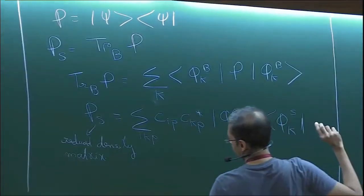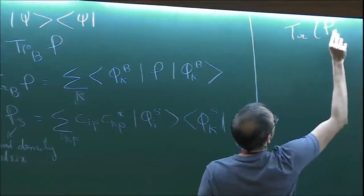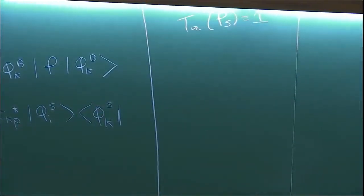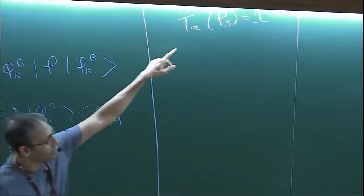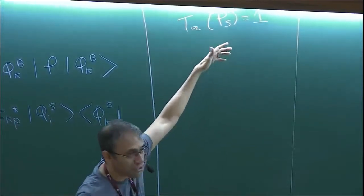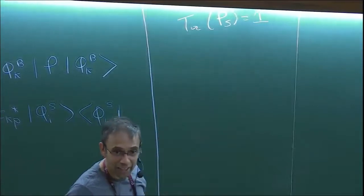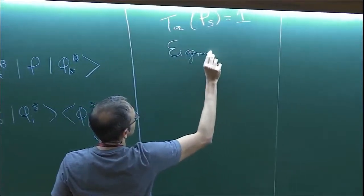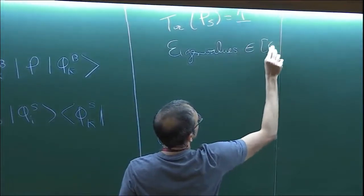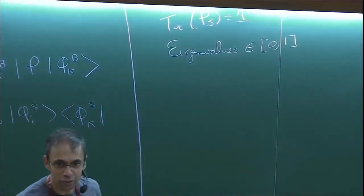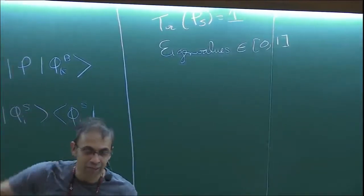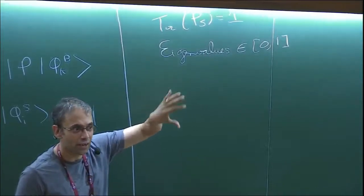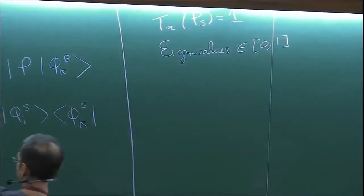You can show — as an exercise — that the trace of the reduced density matrix equals 1, just like any other density matrix. Also show that its eigenvalues lie in the interval between 0 and 1, just like for the regular density matrix. This demonstrates that the reduced density matrix has exactly the properties of any other density matrix — it is a bona fide density matrix for the subsystem.